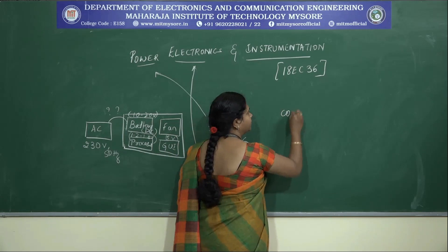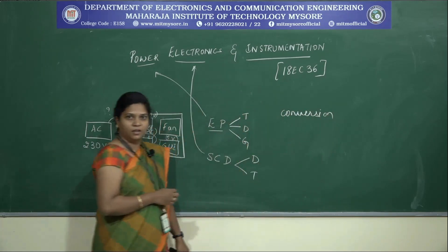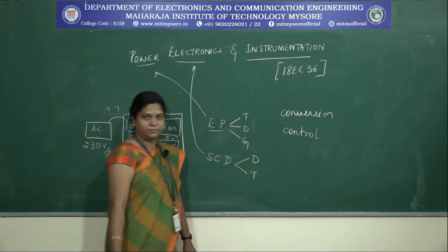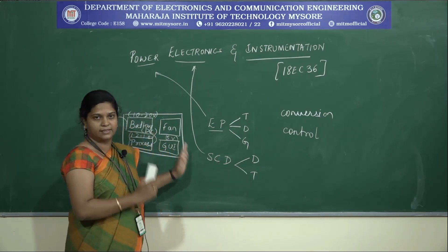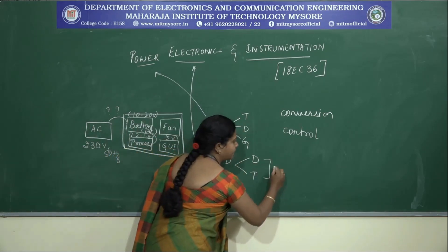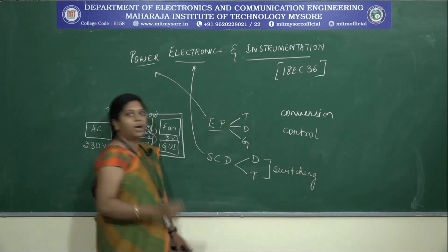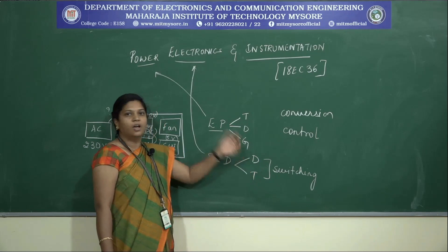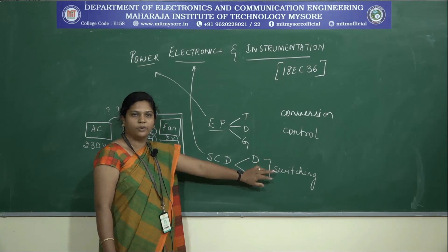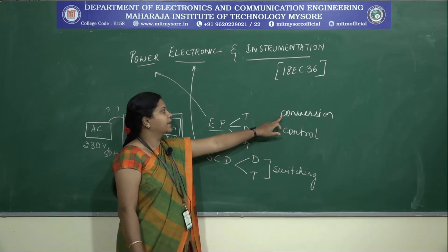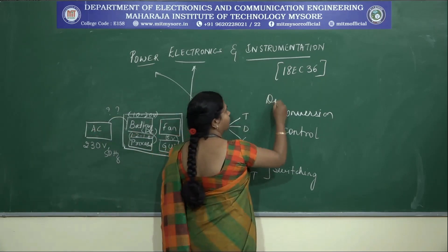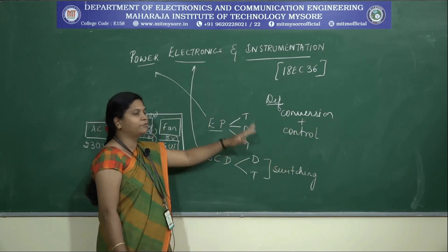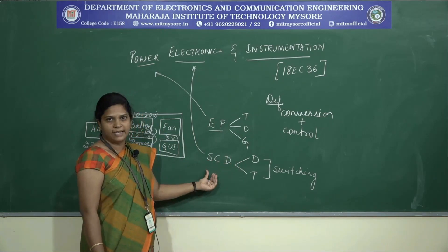The first main thing we are going to do is conversion and controlling action. We know that diodes and transistors are available as semiconductor devices. The switching action of diodes and transistors — how long the device remains on and how long it remains off — is known as the switching time. Depending on how long you want the device to be in the on state or the off state, you achieve the controlling action. So the definition of power electronics is: we are going to convert and control electric power from one form to another form by making use of solid state semiconductor devices.